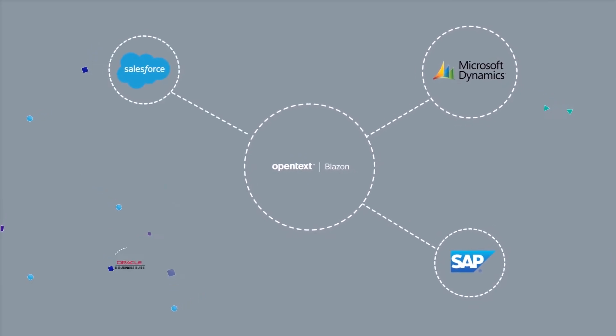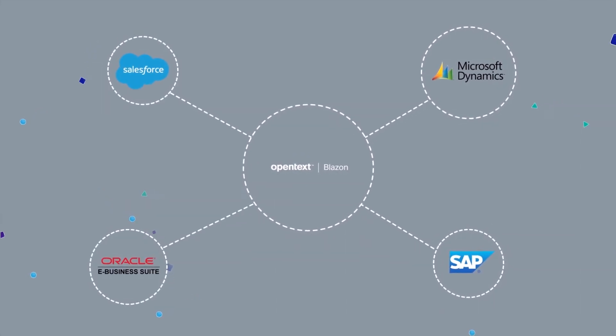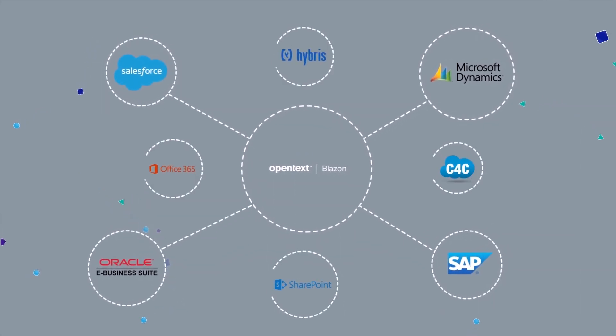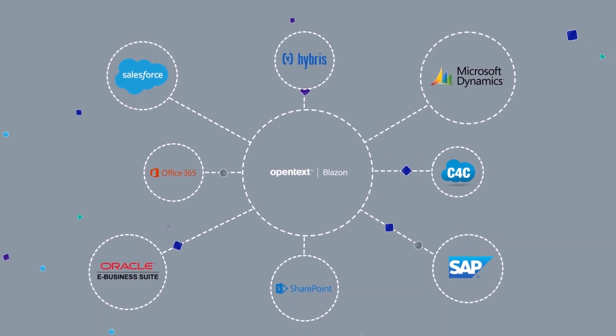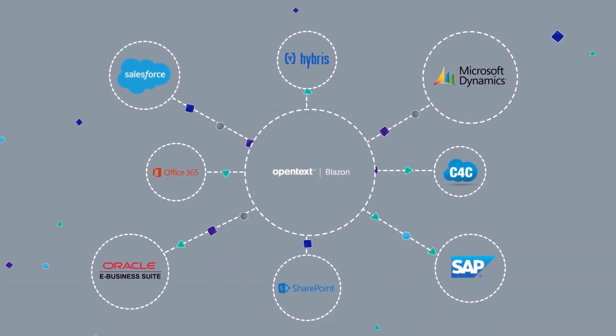Thanks to its comprehensive API, BlazeOn can be integrated with any ECM system, and its flexible architecture allows it to scale up and handle large loads.